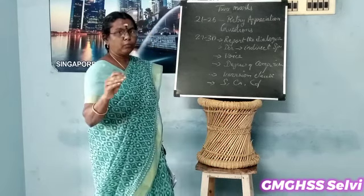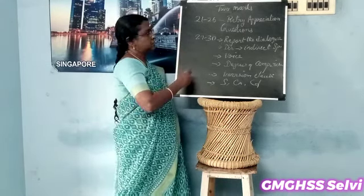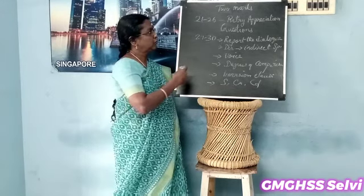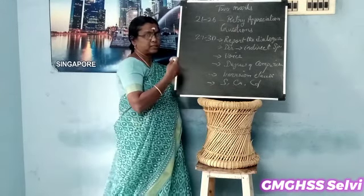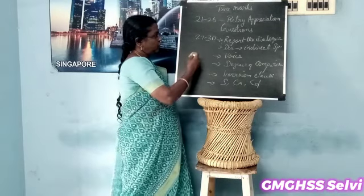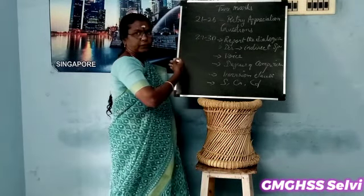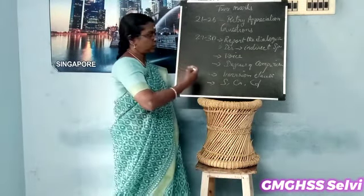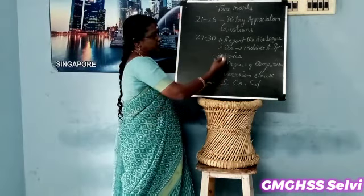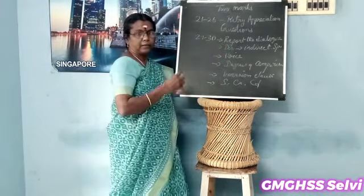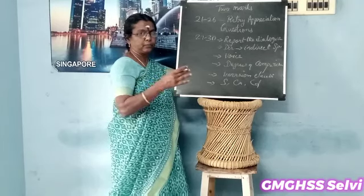These four poems are for our test, and you have to be thorough with those poems and also the questions and language. Now from question number 27 to 30 in the question paper, the following topics are there. The first given topic is 'Report the Dialogue' — a dialogue is given, and you are supposed to report it.